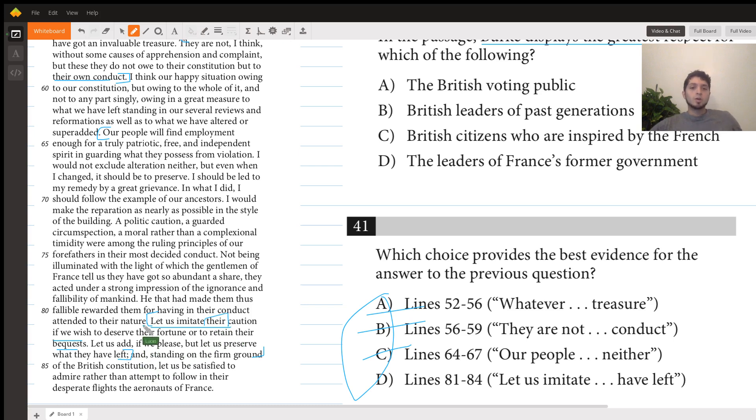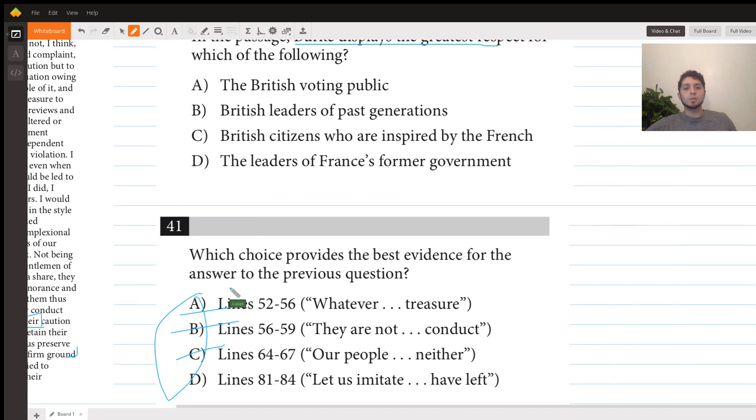We scroll back, and it actually takes a while before we find it. We get a bunch of pronouns until we end up with right here which says 'Is a politic caution, a guarded circumspection, a moral rather than complexional timidity or among the ruling principles of our forefathers in their most decided conduct?' Our forefathers. So here he's talking about our forefathers, and basically these are the people who created the British constitution, who were part of the genesis of that, who developed these principles and established these principles in the constitution.